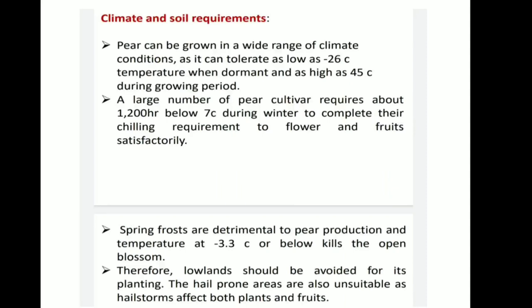Now Climate and Soil Requirements. Pear can be grown in a wide range of climatic conditions, as it can tolerate as low as minus 26 degrees Celsius when dormant and as high as 45 degrees Celsius during the growing period. A large number of pear cultivars require about 1200 hours below 7 degrees Celsius during winter to complete their chilling requirement to flower and fruit satisfactorily. Spring frosts are detrimental to pear production, and temperatures at minus 3.3 degrees Celsius or below kills open blossoms. Therefore, lowlands should be avoided for planting. Hail-prone areas are also unsuitable as hail storms affect both plants and fruits.